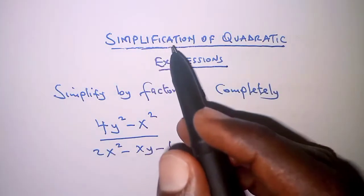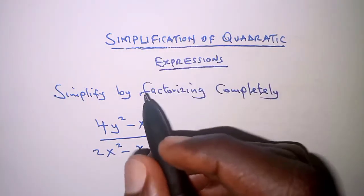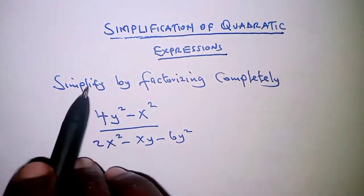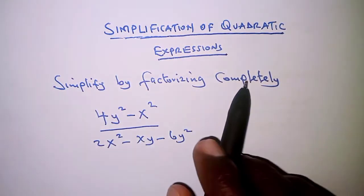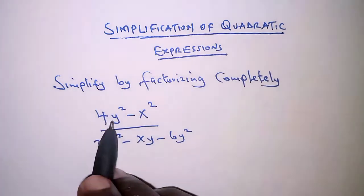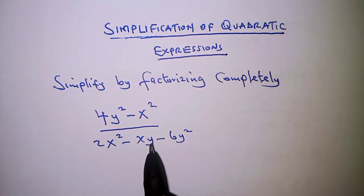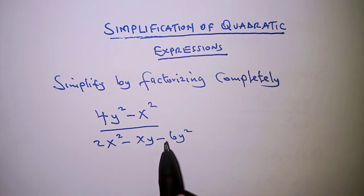Today we are going to learn how to simplify quadratic expressions by factorization. The equation reads: simplify by factorizing completely (4y² - x²) / (2x² - xy - 6y²).